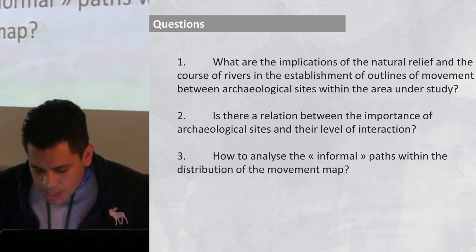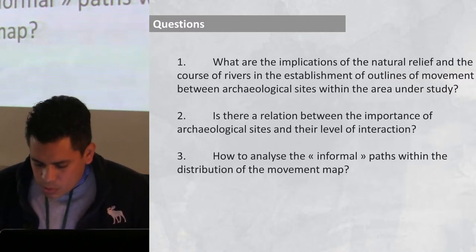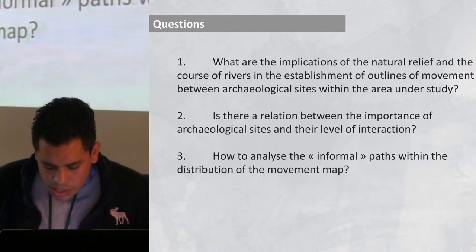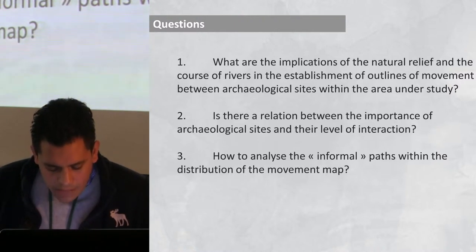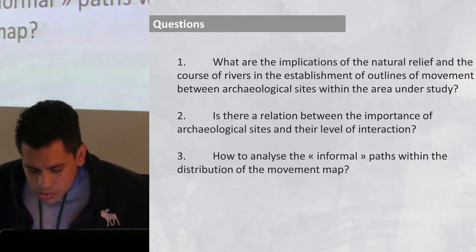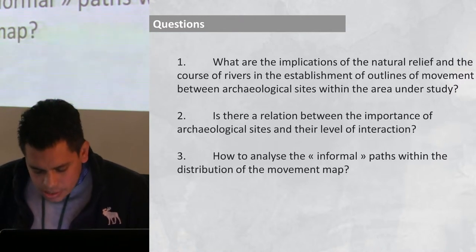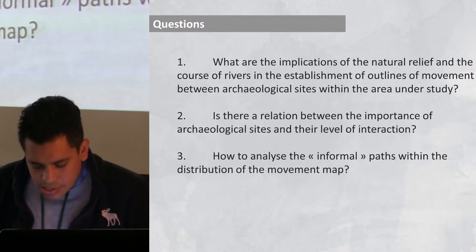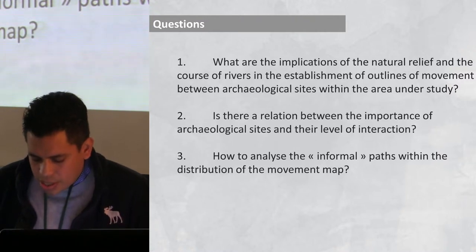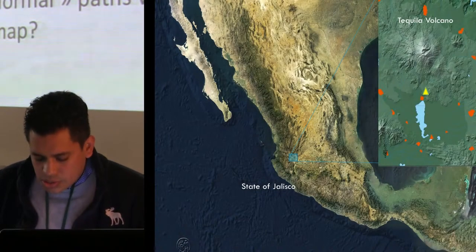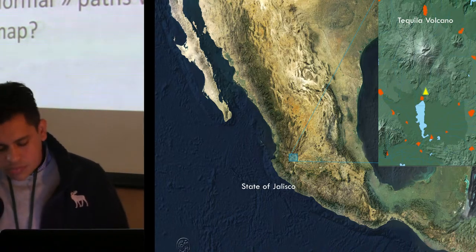How do we analyze the informal paths within the distribution of the models on the map? To respond to these questions, we have created a Least Cost Path Network that we have analyzed using GIS, and we have used cost surface and friction surface tools to model the landscape in digital terms. The analysis of Least Cost Path has become important in archaeology. The idea behind this analysis is that the movement from one point to another generates a cost, and the objective is to choose a path of minimum cost in terms of energy or time.